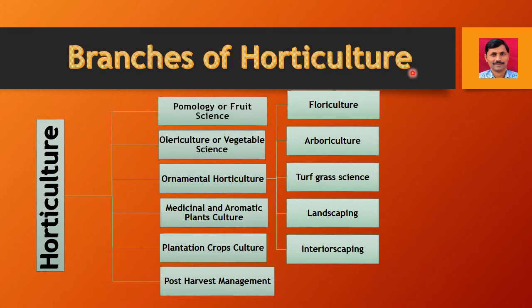The branches of Horticulture are: Pomology, which is Fruit Science; Olericulture, which is Vegetable Science; Ornamental Horticulture; Medicinal and Aromatic Plants Culture; Plantation Crops Culture; and Post-Harvest Management. Ornamental Horticulture is further divided into Floriculture, Arboriculture, Turfgrass Science, Landscaping, and Interiorscaping.